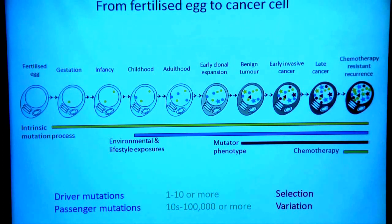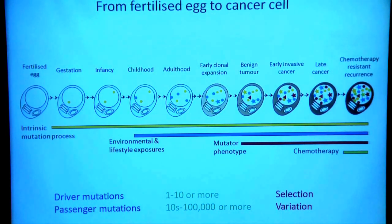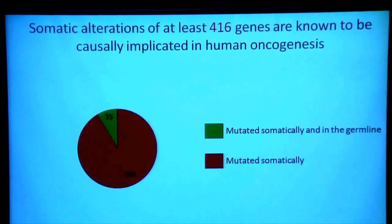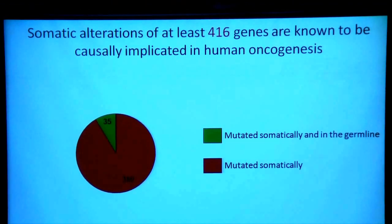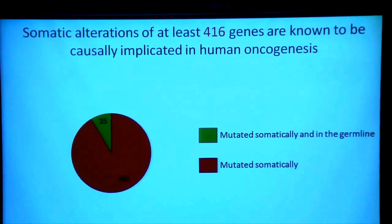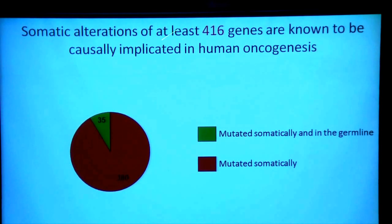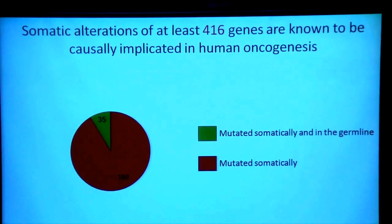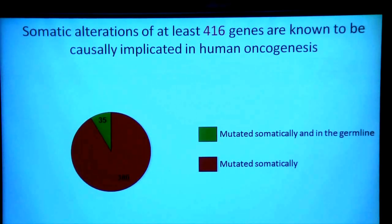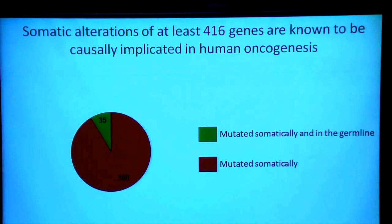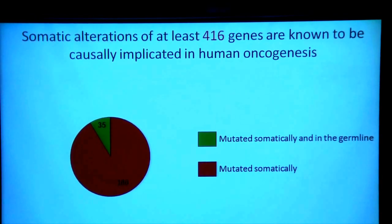With respect to driver mutations and the cancer genes in which they occur, finding those cancer genes has been a central aim of cancer research for the last three decades, and it's been a pretty successful enterprise. Our most recent count indicates that there are well over 400 genes in the human genome which are mutated — by base substitutions, indels, rearrangements, or copy number changes — and that those 400-odd genes are causally implicated in the genesis of one or other of the 200 different types of human cancer.